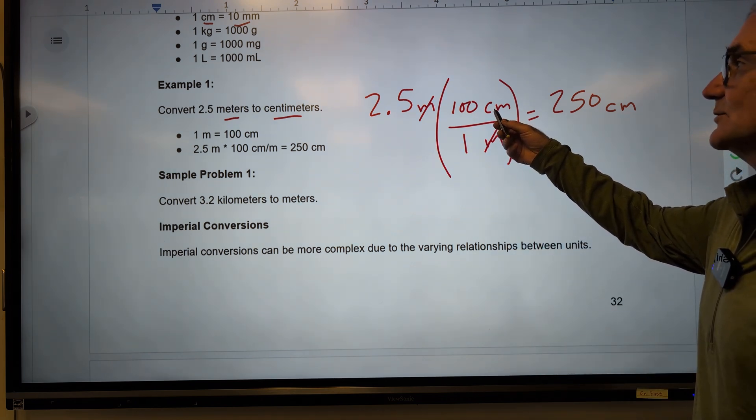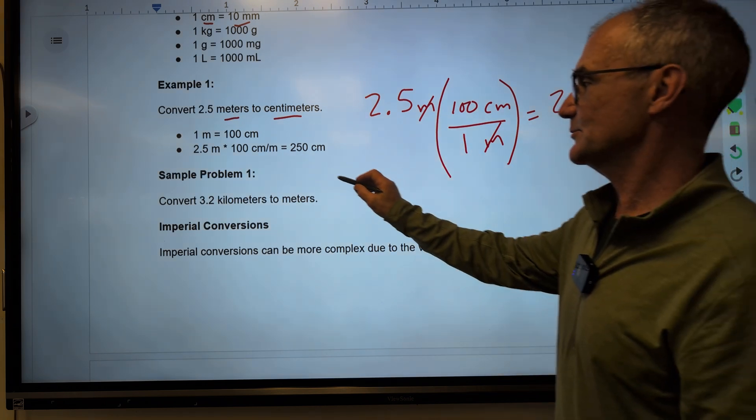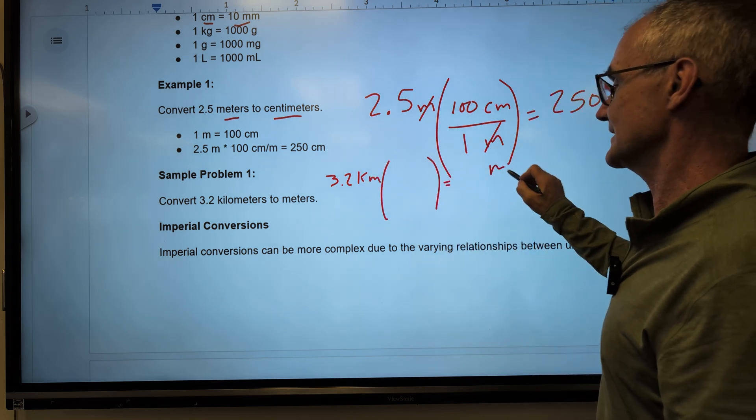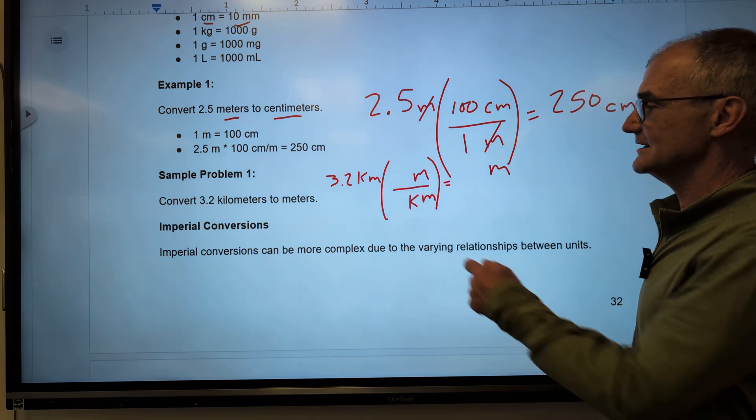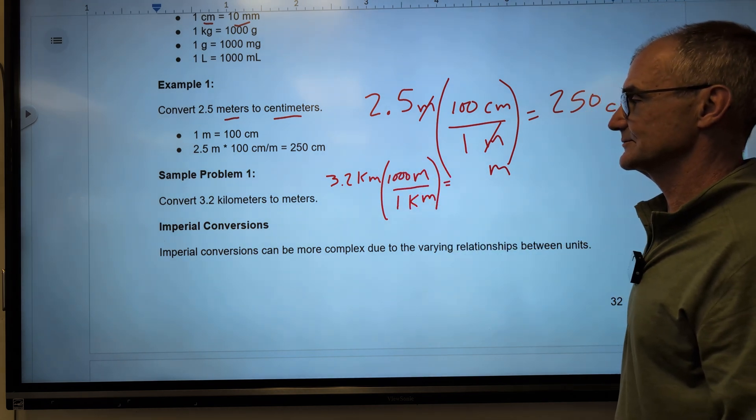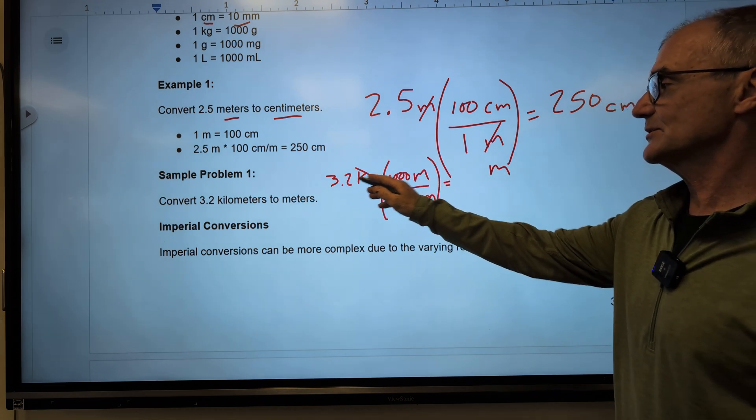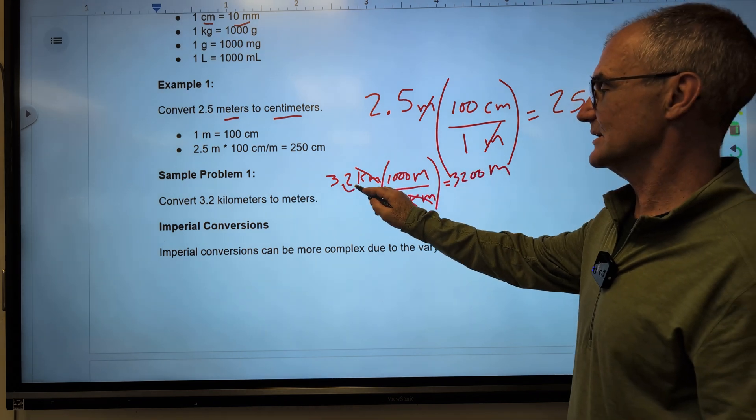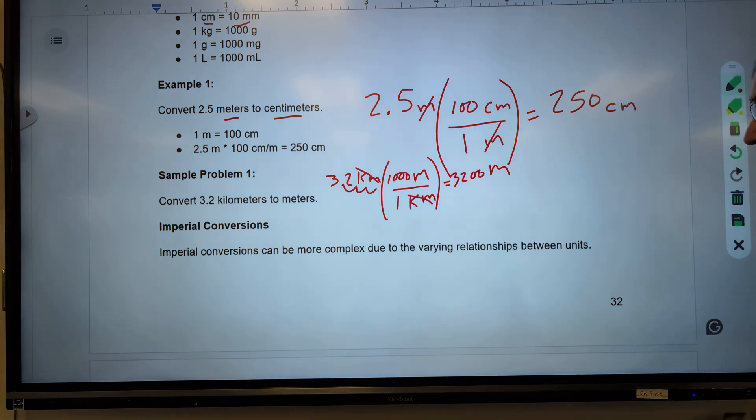This idea of multiplying by 1 is a big idea. This unit is what you want to cancel. There's another sample problem here. 3.2 kilometers, and I want meters. So I want meters in my answer. That means I have to have kilometers down here, meters up here. Kilo is 1,000, so there are 1,000 meters in 1 kilometer. Now my kilometers will cancel. That's giving me meters, which is what I want. 3.2 times 1,000 is 3,200. I move this decimal over 1, 2, 3 for the three zeros.